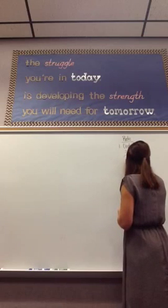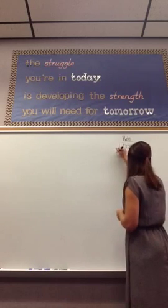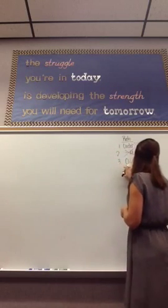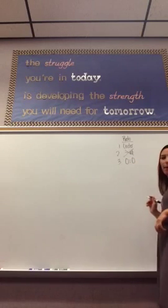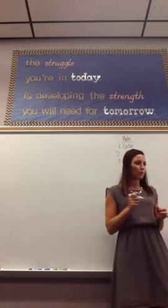And lastly, both numbers cannot be zero. It's okay if one of the numbers is zero, but both numbers in a ratio cannot be zero. Those are the only three rules for ratios.